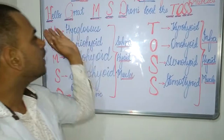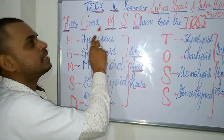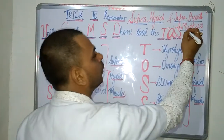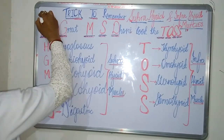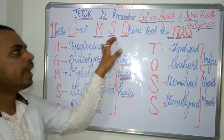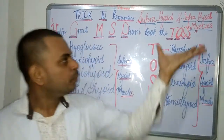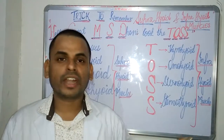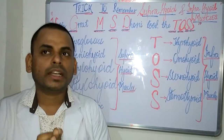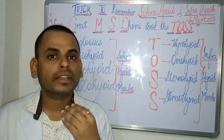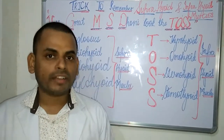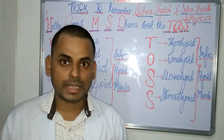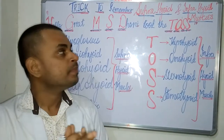The mnemonic or short trick I have made is the statement: 'Hello Great MS Dhoni Took The Toss.' If we just remember this quote, we can very easily make out what are the suprahyoid muscles and what are the infrahyoid muscles. The hyoid bone is located in the neck — muscles lying above it are suprahyoid, and those below it are infrahyoid muscles.